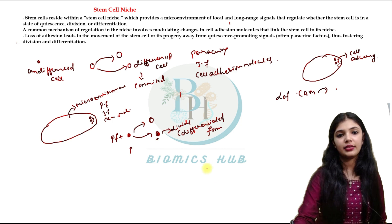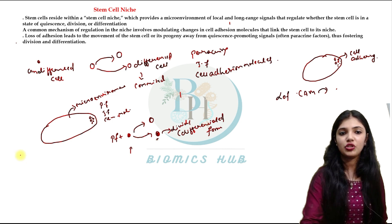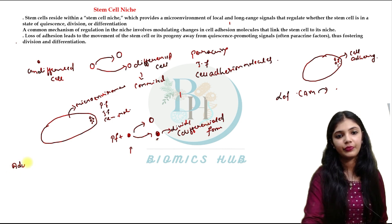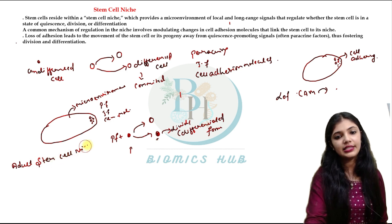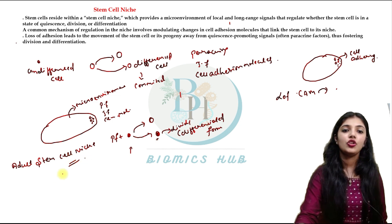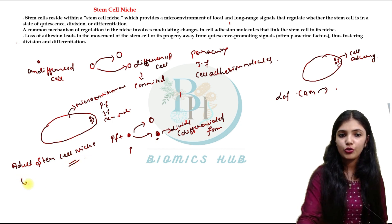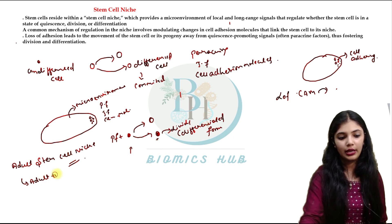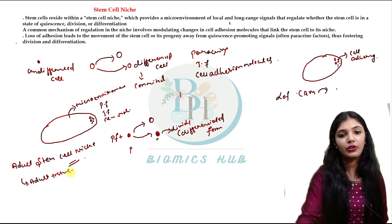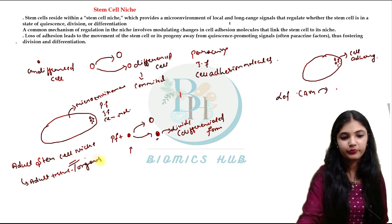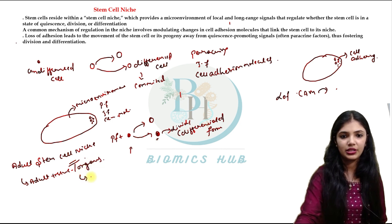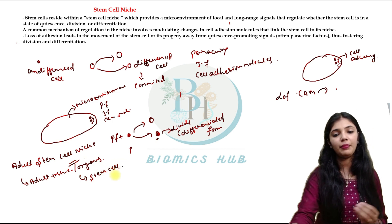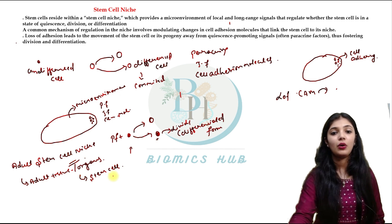There is another term: the adult stem cell niche. Adult tissues and adult organs contain their own stem cells and maintain them. Adult stem cells maintain their own stem cell pool. Why? Because adult tissues should have more regenerative property and the ability to maintain their own pool.